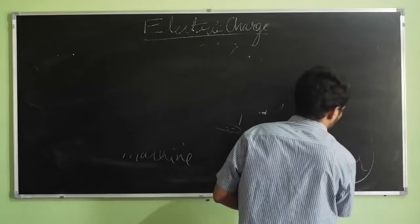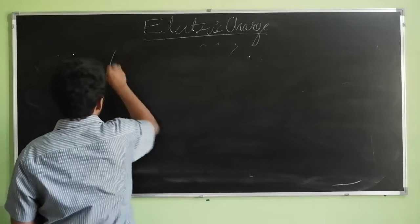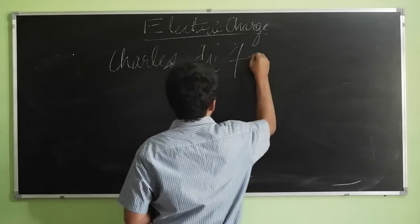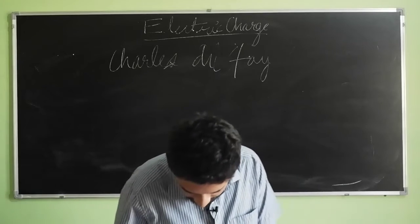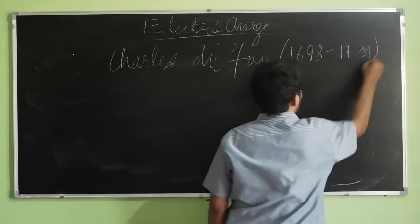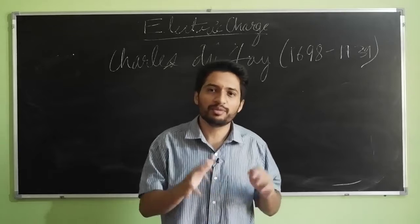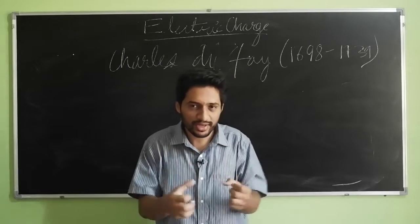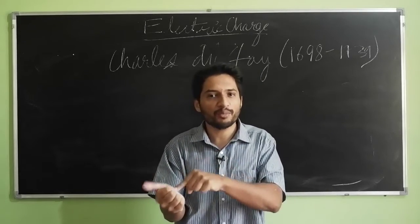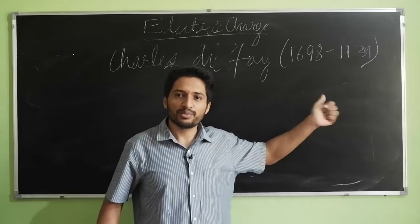Around the same time as Stephen Gray, there was a French chemist named Charles Dufay, who lived from 1698 to 1739. What Dufay was doing was studying the work of those before him, trying to find other combinations of objects he could rub to give electrical — magical attracting — properties.